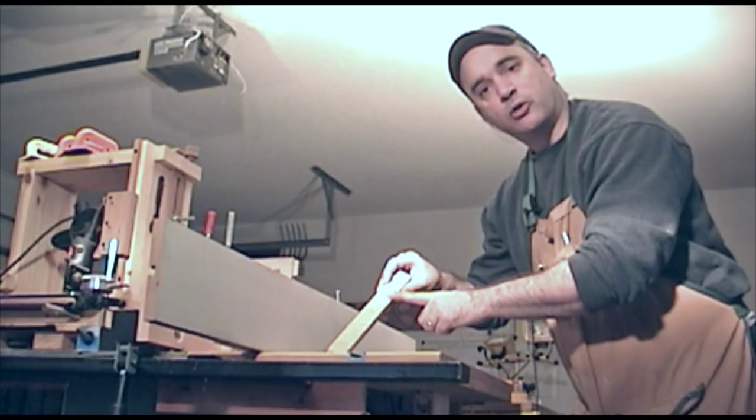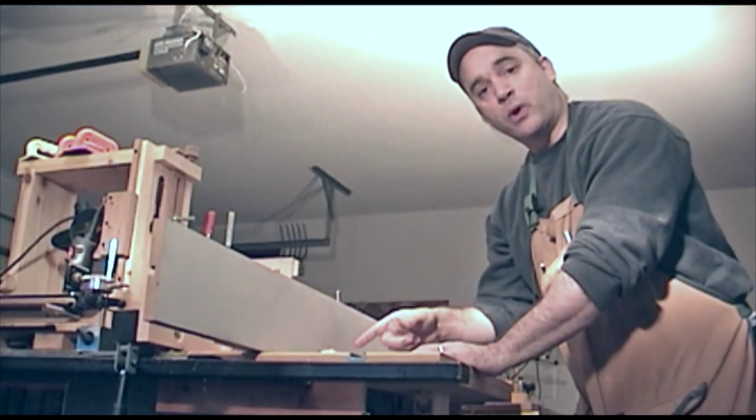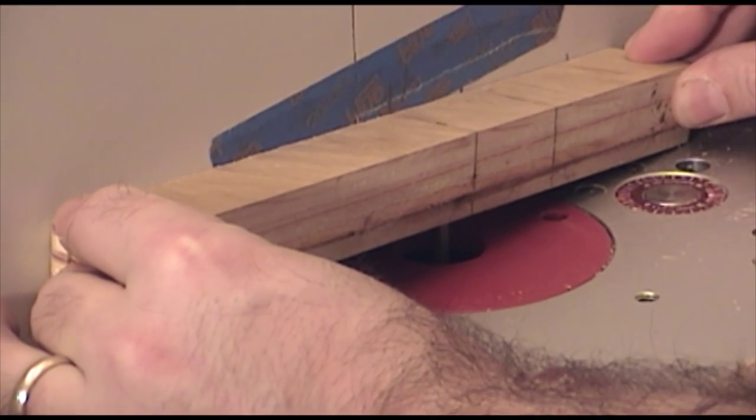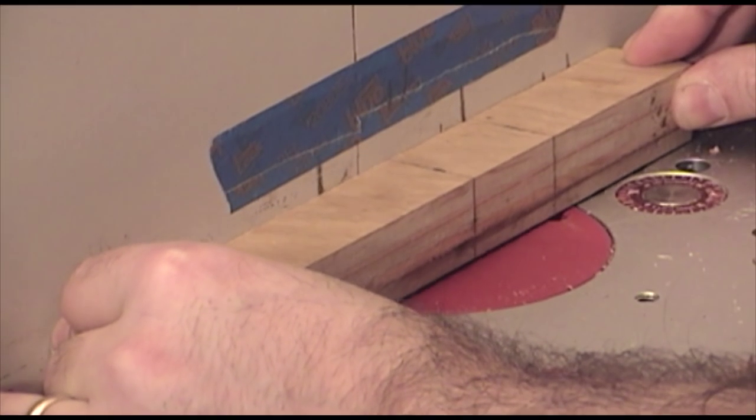In order to make this jig adjustable, we need to create a slot. And we'll do that at the router table in two passes. And on the second pass, we'll raise the height of the router blade.